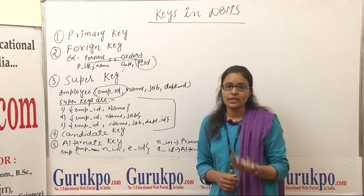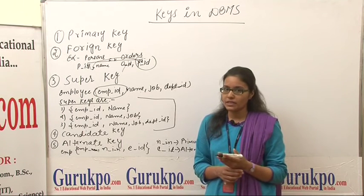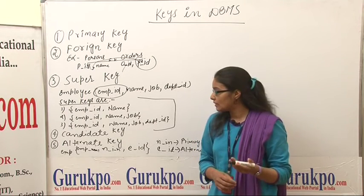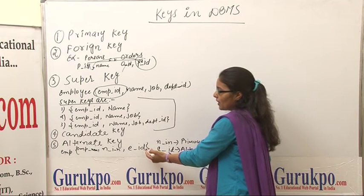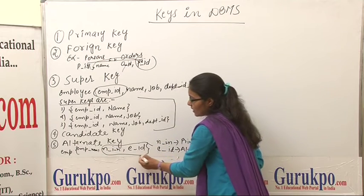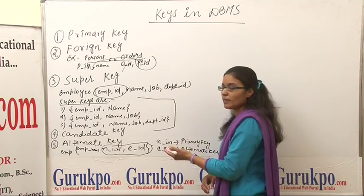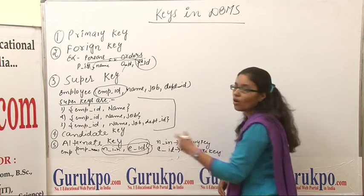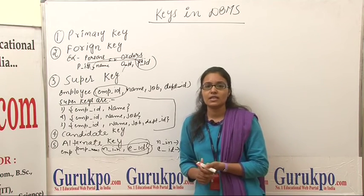The next one is alternate key. A part of the candidate key which is not a primary key is called an alternate key. For example, we have a table Employee with the fields Employee Name, National Insurance Number, and Employee ID. Here, National Insurance Number and Employee ID are the candidate keys. If we choose National Insurance Number as the primary key, then Employee ID will be treated as the alternate key. That was all about keys in the database management system.